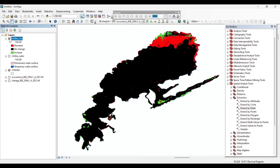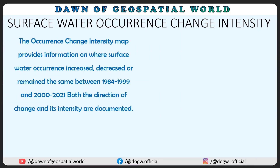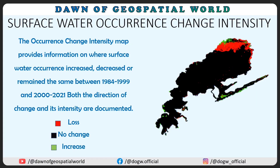Let's learn about what is the intensity map. The Surface Water Occurrence Change Intensity map provides information on where surface water occurrences increased, decreased, or remained the same between 1984 to 1999 and between 2000 to 2021. The green color patches denote an increase in water bodies, the red color patches denote a decrease, and the black color area remains unchanged.